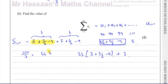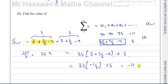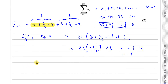So what does this give us? That's going to be 33 times: 3 minus 4 is minus 1, and minus 1 plus 2 thirds is minus 1 third. So you have 33 times minus 1 third, which is minus 11, plus 3, which gives us negative 8. So the sum of u_r from r equals 1 to 100 is going to be negative 8.